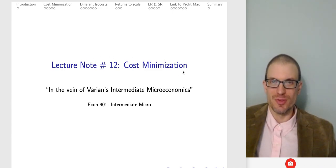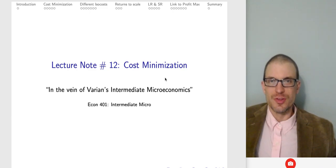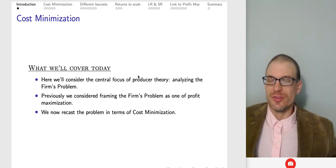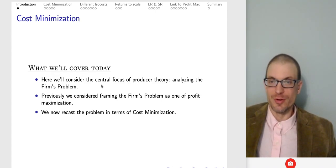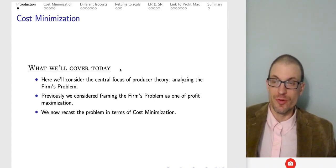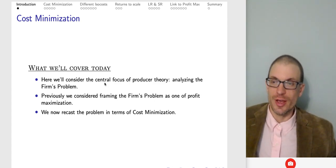In this video, I'm going to talk about cost minimization, which is a chapter in Varian's Intermediate Micro book. This is going to be another installment in our discussion of producer theory. Previously we thought about the firm's profit maximization problem; now we'll think about the firm's cost minimization problem. It is the producer theory analog to the consumer's expenditure minimization problem.